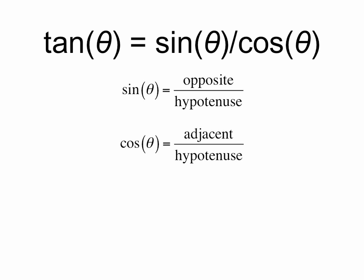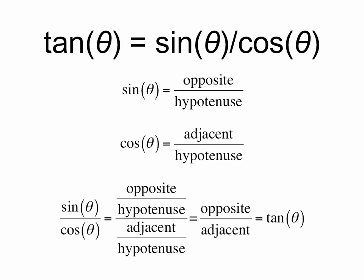Another quick note is that tangent of theta can be related to the other two as sine over cosine. The sine of theta is opposite over hypotenuse, and cosine is adjacent over hypotenuse. If we take sine divided by cosine, it's opposite over hypotenuse divided by adjacent over hypotenuse — the hypotenuse terms cancel, leaving opposite over adjacent, which is the definition of tangent of theta.